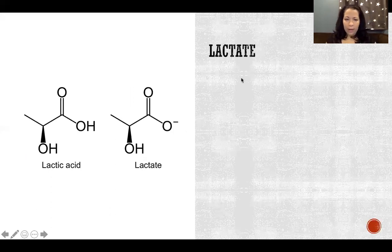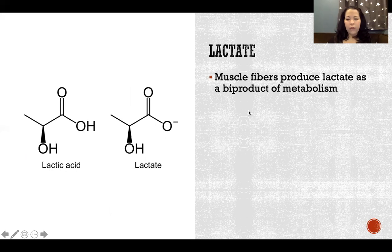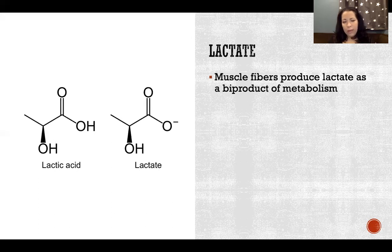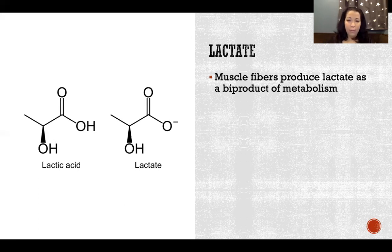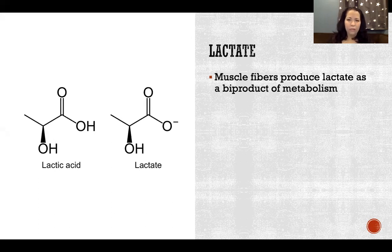Muscle fibers produce lactate as a byproduct of metabolism, which is frequently confused with lactic acid. What we are producing and what is circulating in our blood is lactate, which is a base — not lactic acid, which is an acid. At the levels we would produce if it were lactic acid remaining acidic in the body, we would become extremely acidic and it would not be compatible with life. Thankfully it's actually lactate, a base, so we're not becoming acidic from it.